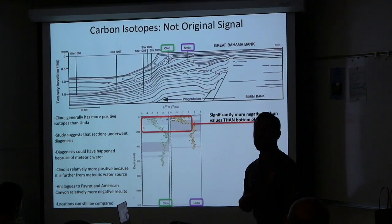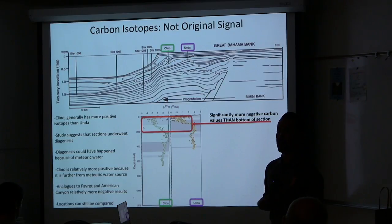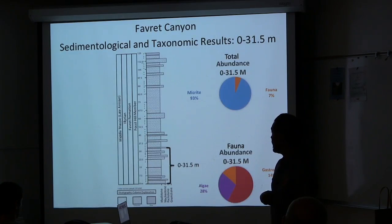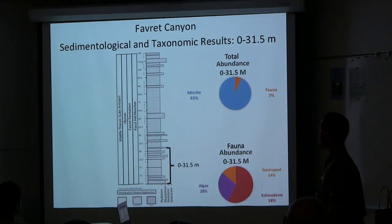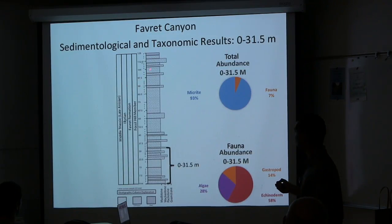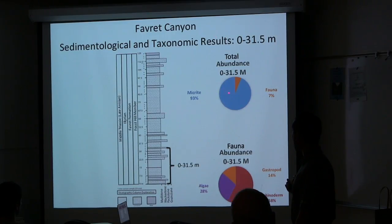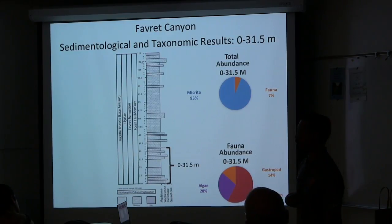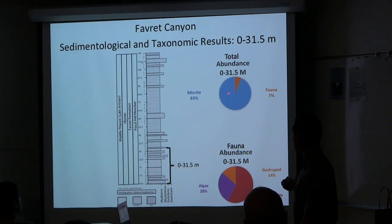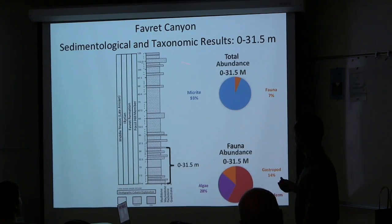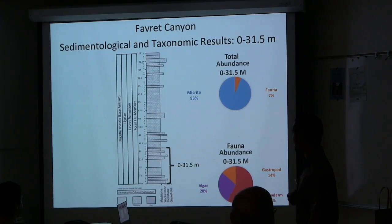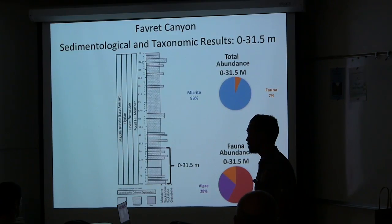Fabric and American Canyon can still be compared because of prior biostratigraphic work. For Fabric Canyon's sedimentological and taxonomic results, the stratigraphic column shows abundance data from thin section point counts: in blue is micrite lithology, and in orange is fauna abundance. The first 31 meters of Fabric Canyon are composed of thin mudstone, wackestone, and packstone beds, with one thick mudstone bed and one thick siltstone bed. Fauna observed include 58% echinoderms, 28% algae, and 14% gastropods.